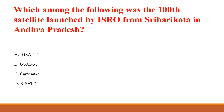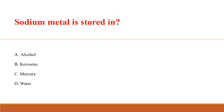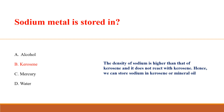Which among the following was the hundredth satellite launched by ISRO from Sriharikota in Andhra Pradesh? Answer C: Cartosat-2. ISRO successfully launched a Cartosat-2 series satellite along with 30 other spacecraft using its Polar Satellite Launch Vehicle.